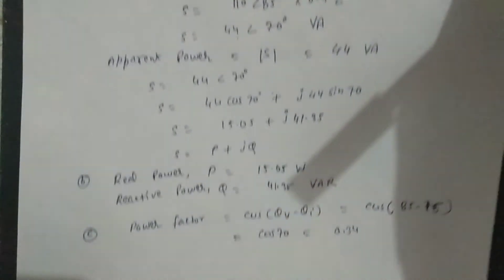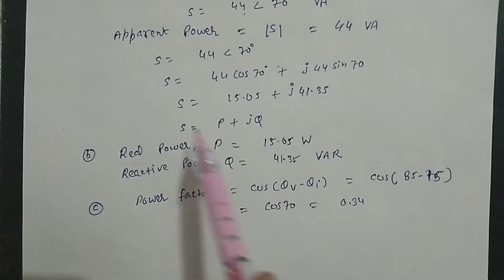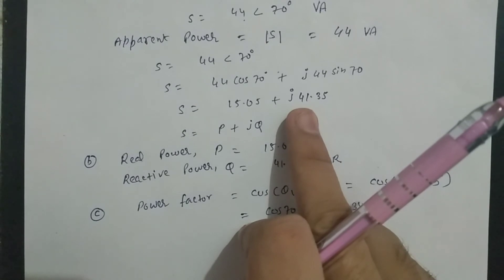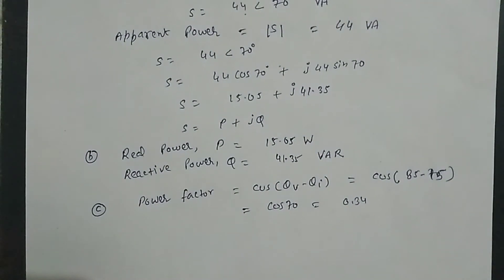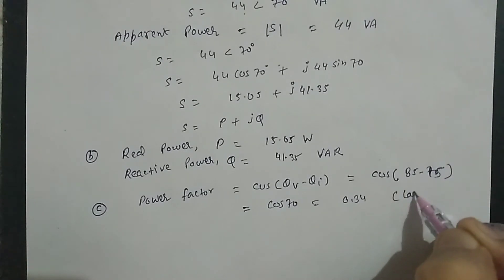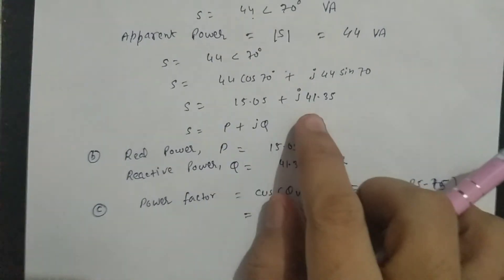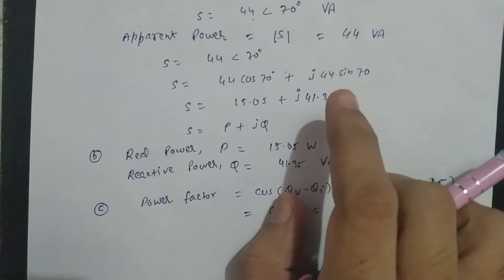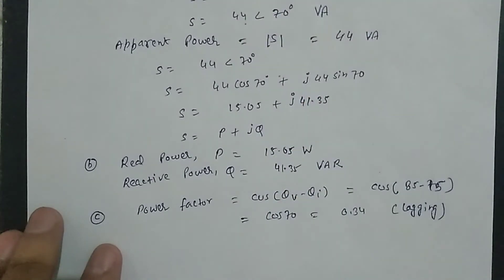अब यह lagging होगा या leading — इसके लिए complex power देखो। S = 15.05 + j41.35 में J का sign positive है, यानि inductive load है। Inductive load के लिए power factor lagging होता है। अगर J negative होता तो capacitive load और leading power factor होता।